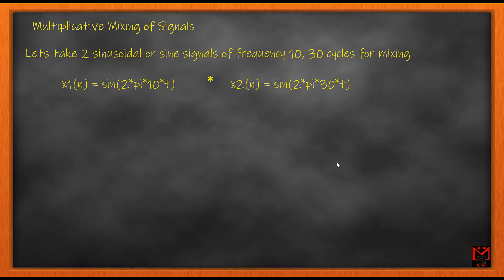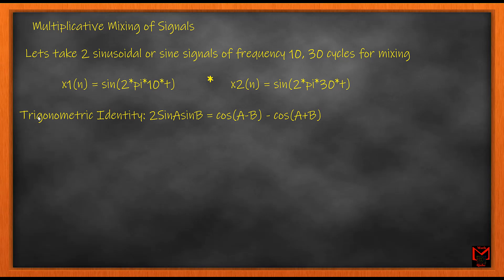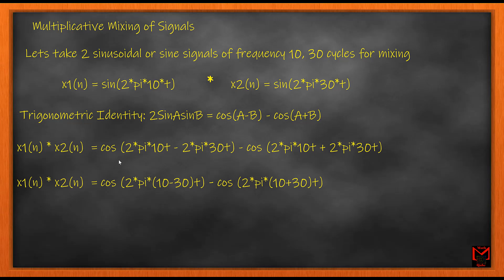Now let's come to the multiplicative mixing of signals. For multiplicative mixing we are going to take the same two example signals and multiply them together. In order to carry out this multiplication, the trigonometric identity 2·sin(a)·sin(b) = cos(a−b) − cos(a+b) comes in handy. Here a = 2π·10t and b = 2π·30t, and I'm going to apply this trigonometric identity to our multiplicative mixing.